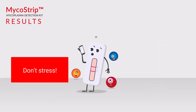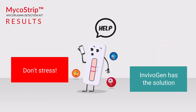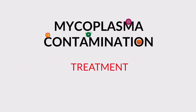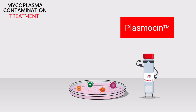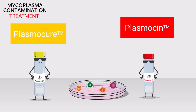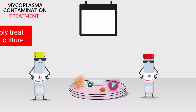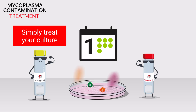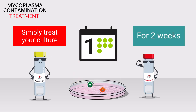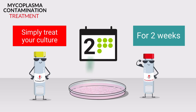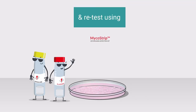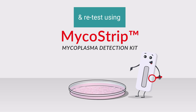But don't stress. If your MicroStrip test is positive, InVision has the solution for you. Your culture is easily treatable with our anti-mycoplasma reagents, Plasmacin or PlasmaQR. By simply treating your culture, they allow you to swiftly combat any contamination. After the two-week treatment, simply retest using MicroStrip.